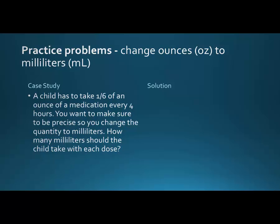Last problem: a child has to take one-sixth of an ounce of medication every four hours. You want to be precise, so you change the quantity to milliliters. How many milliliters should the child take with each dose? It's children's medication and the child may be very small, so precision matters. One-sixth times 30 mLs gives five mLs — something we can measure very precisely and hopefully accurately.